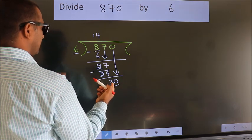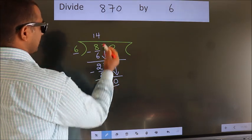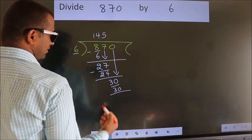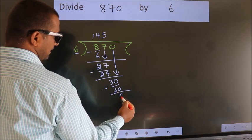When do we get 30? In 6 table, 6 fives, 30. Now, we subtract. We get 0.